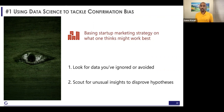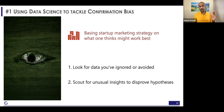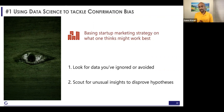One hard tip there is: start by disproving your hypothesis. This ties back to the exercise we had at the start. If you're trying to guess the sequence of numbers, a better guess would be to try to disprove what you think might be at play. So scout for unusual insights.